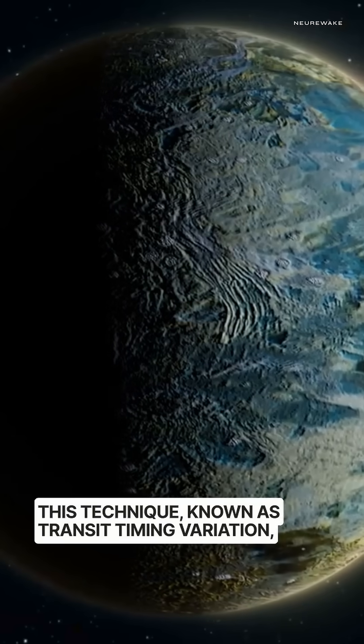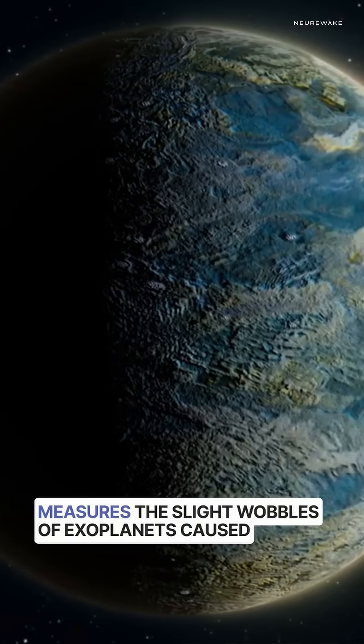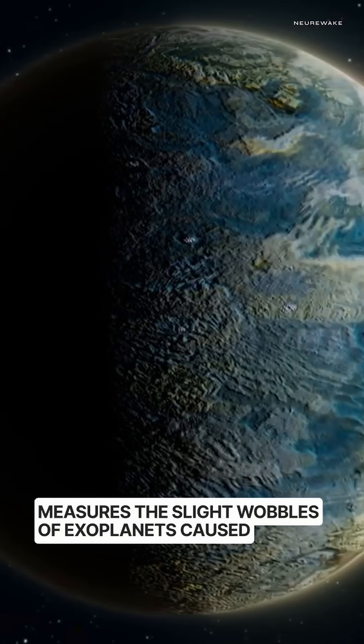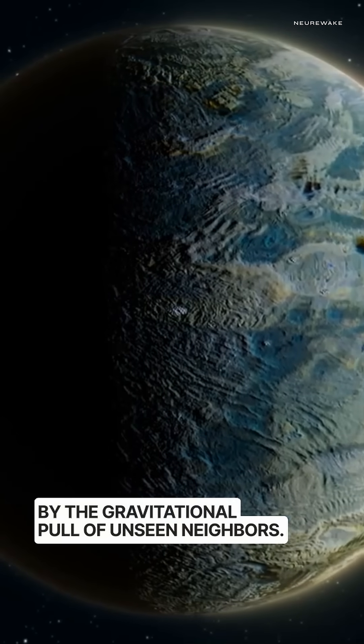This technique, known as transit timing variation, measures the slight wobbles of exoplanets caused by the gravitational pull of unseen neighbors.